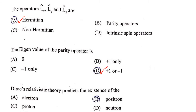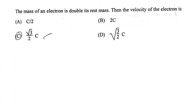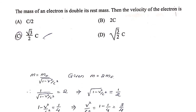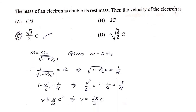The operators Lx, Ly, Lz are Hermitian. The eigenvalues of the parity operator are +1 or −1. Dirac's relativistic theory predicts the existence of the positron. Next: the mass of an electron is double its rest mass. We know m = m₀/√(1−v²/c²). Setting m = 2m₀, we get 1/√(1−v²/c²) = 2, so 1−v²/c² = 1/4, giving v²/c² = 3/4 and v = (√3/2)c. Therefore, option C is the correct answer.